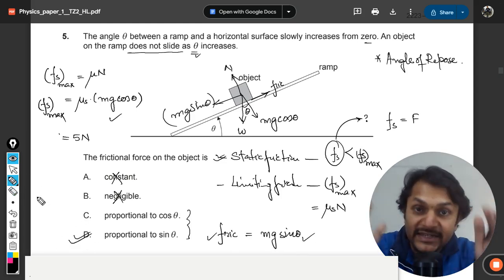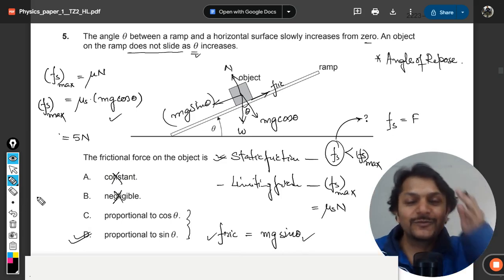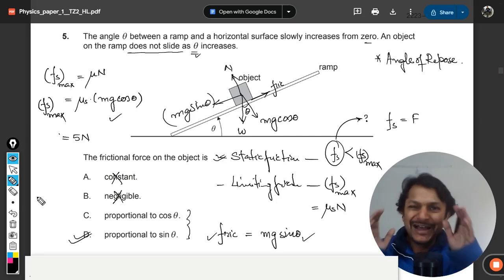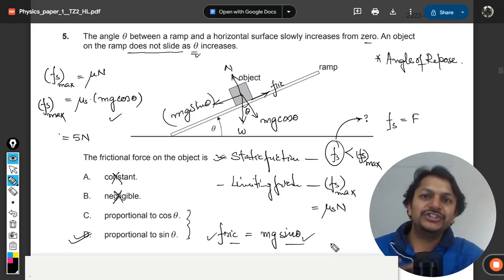Hence the answer will be D, and I am damn sure that 99% of the students will be wrong when this question was asked to them in the question paper. It's a very beautiful, very tricky question, no doubt about that. So the answer for the friction will be mg sin theta, provided they are not teaching you angle of repose in their books or in their classes.